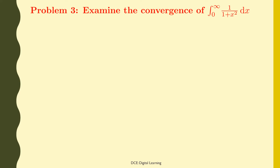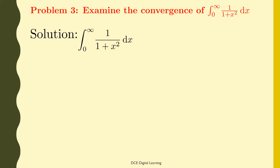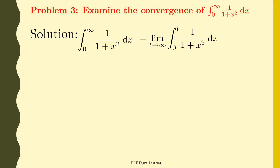Problem 3. Examine the convergence of the integral of 1/(1 + x²) dx from 0 to infinity. Solution. The given integral, integral of 1/(1 + x²) dx from 0 to infinity, is an improper integral of first kind as the upper limit is infinity. By definition, it is equal to the limit of the integral of 1/(1 + x²) dx from 0 to t as t tends to infinity.